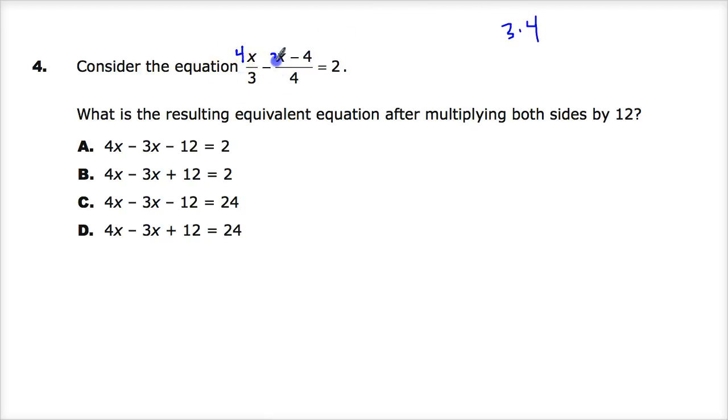And in this case, we have to do times 3. You have to do it by the whole term, by the way. So you end up with 4x minus 3 times x minus 4. And our common denominator is, of course, 12. And that's equal to 2. We haven't got to the multiply by 12 part yet.